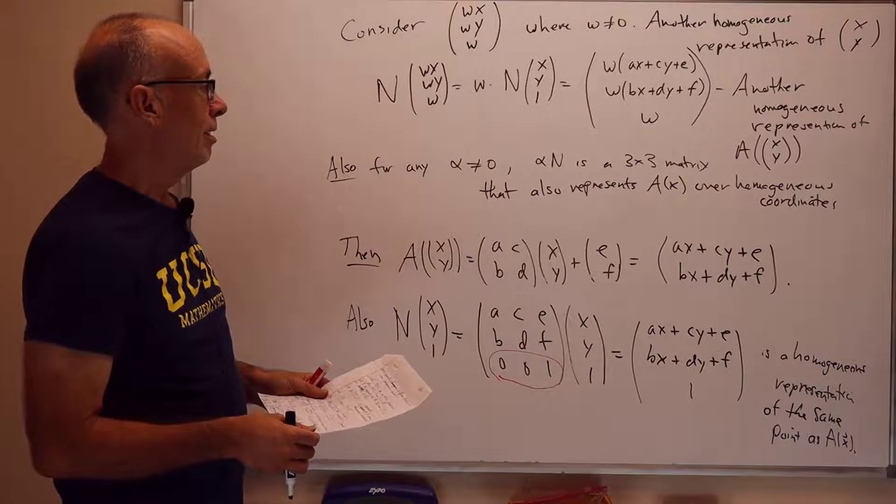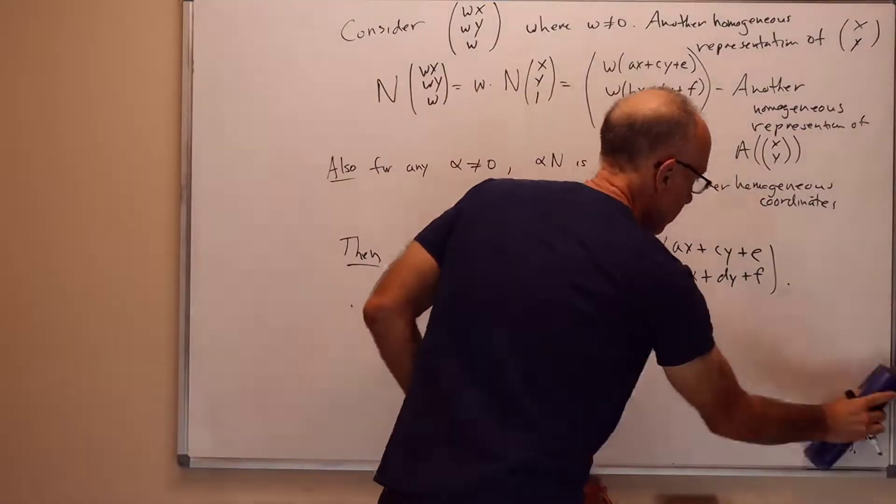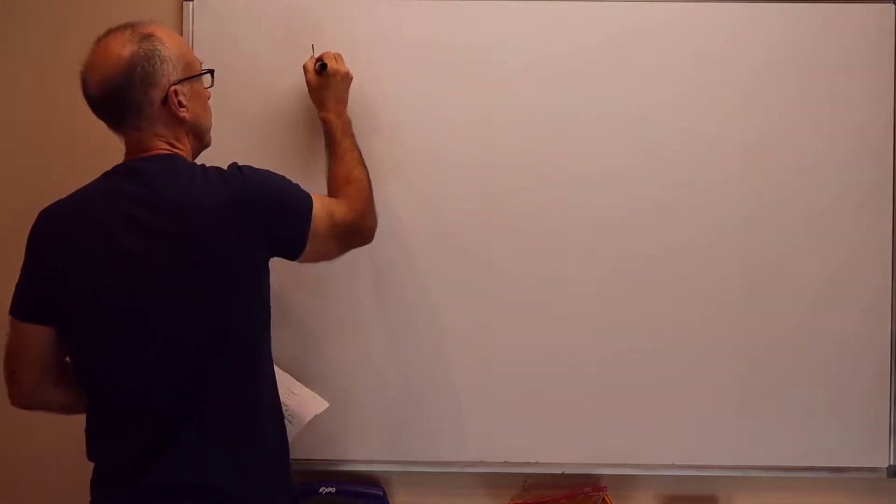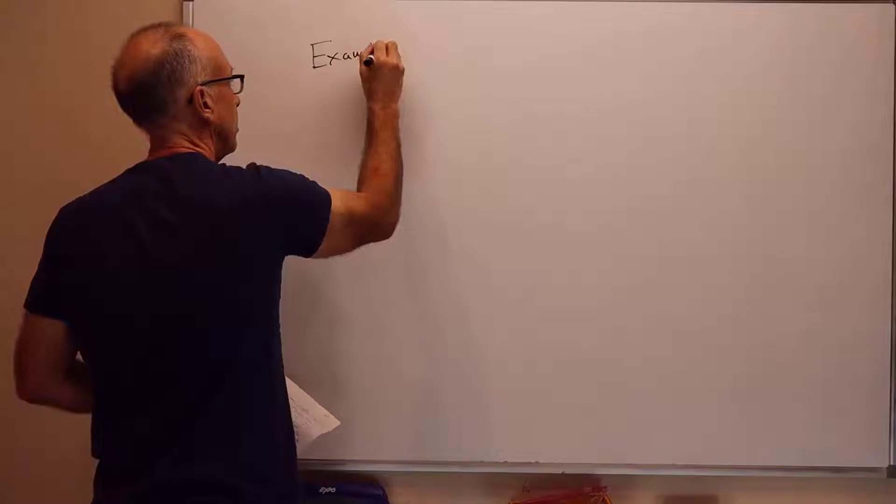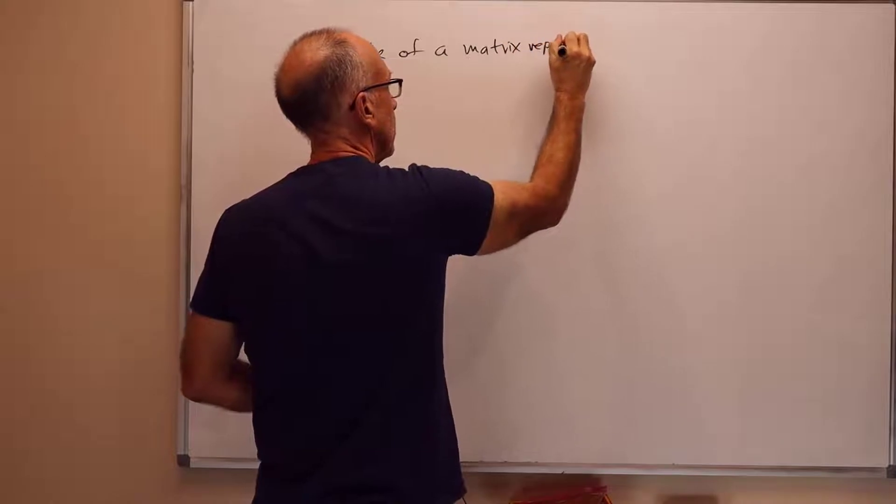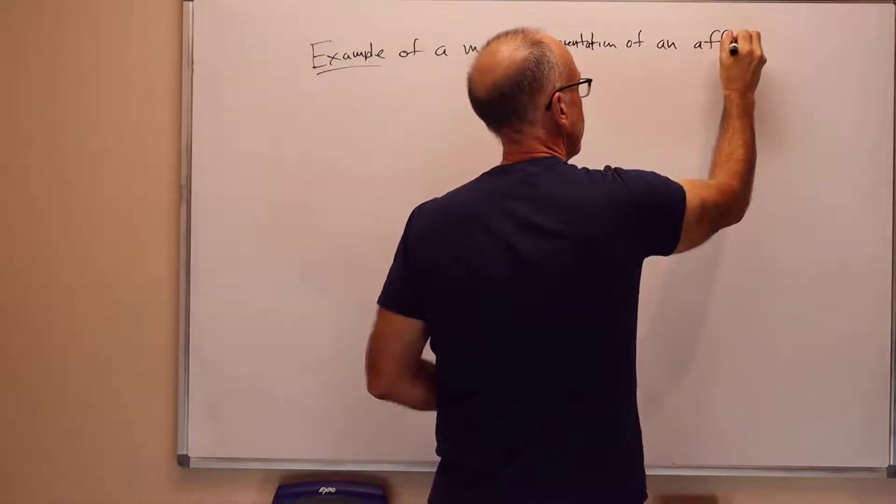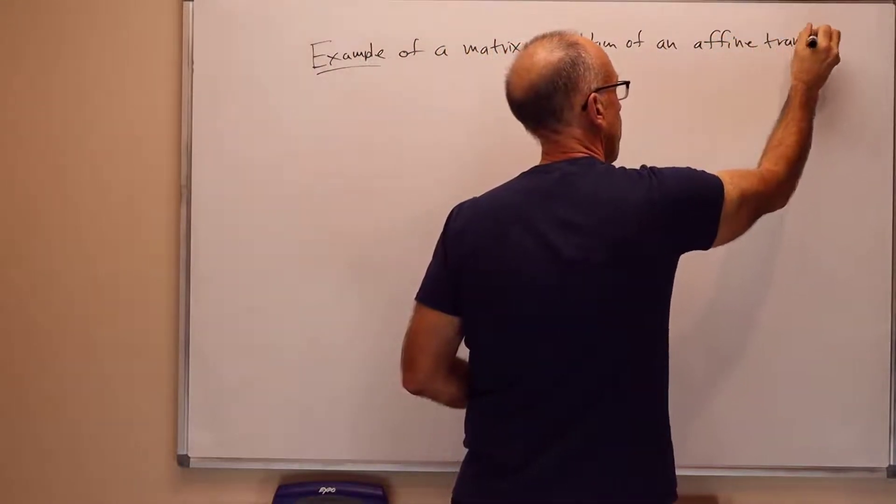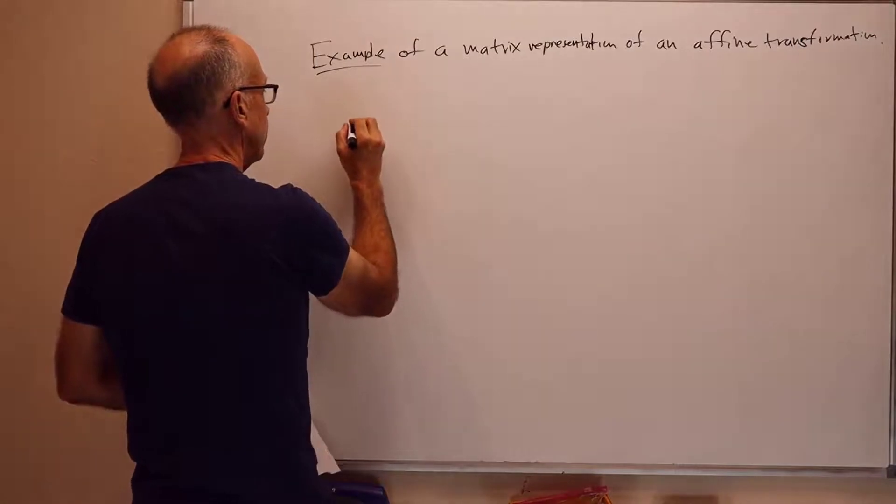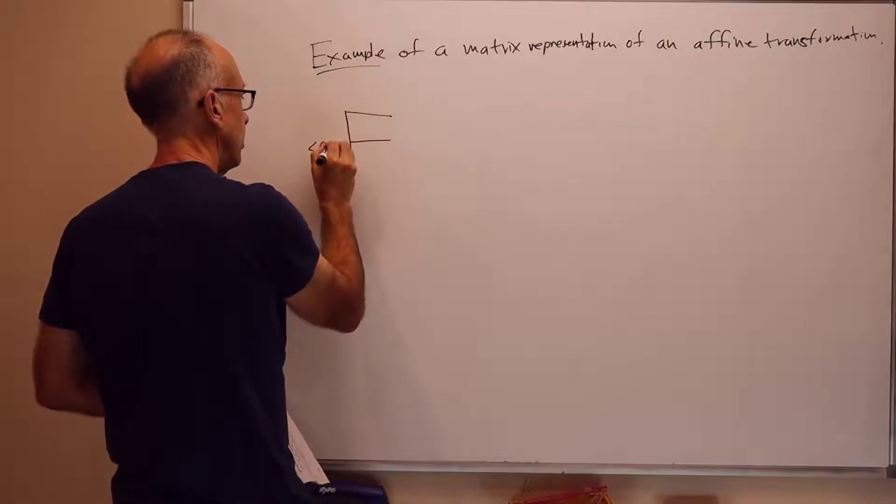I would like to end up with a quick example, and then we'll be done on this presentation. So let's do an example of a matrix representation of an affine transformation.